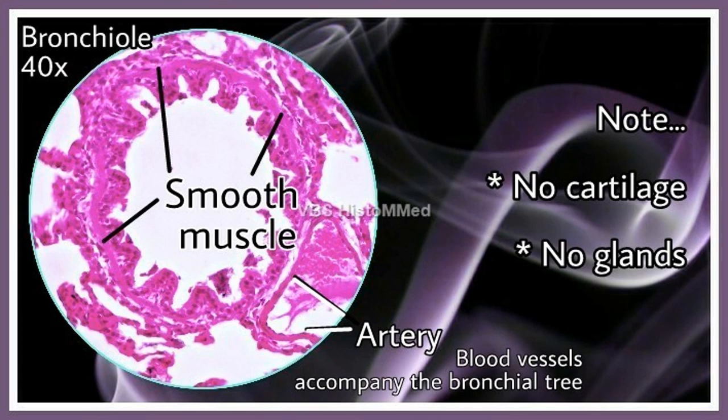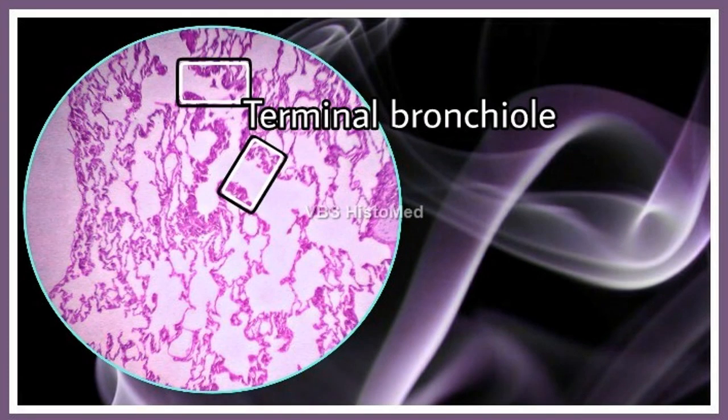Incidentally, all along the tracheobronchial tree you will invariably find a blood vessel — an artery or vein — in the immediate vicinity, because the tracheobronchial tree carries with it the pulmonary blood vessels. It is therefore not unusual to find an artery in the immediate vicinity of a bronchiole.